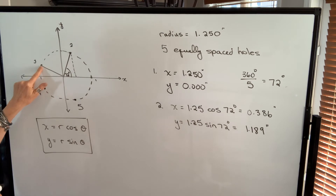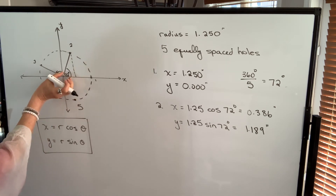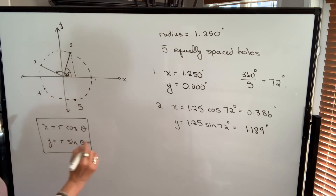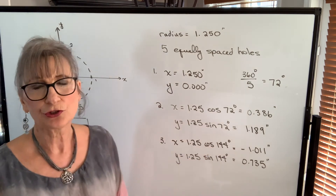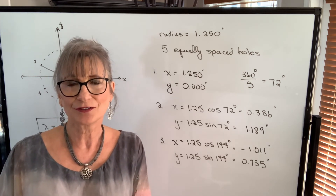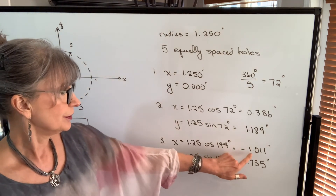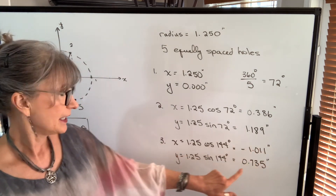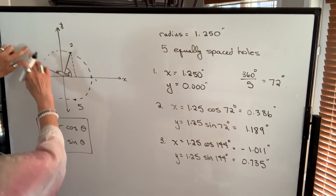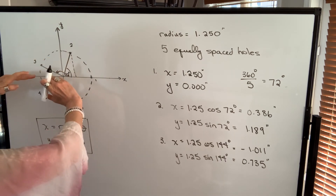To find the coordinates for hole number three, we add another 72 degrees to get 144 degrees. If you're unsure how to enter that into your calculator, check your particular calculator's instructions, or if you have a Texas Instruments XA30, see the video where I demonstrated that. For hole three at 144 degrees, x equals negative 1.011 inches and y equals 0.735 inches. That makes sense because in quadrant two, x is negative and y is positive.